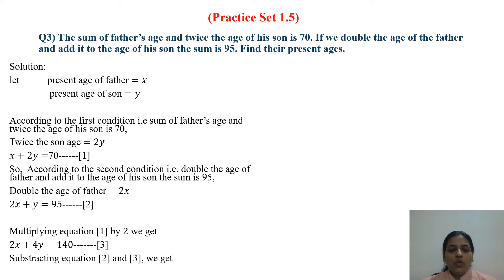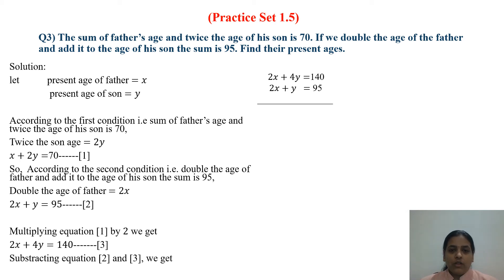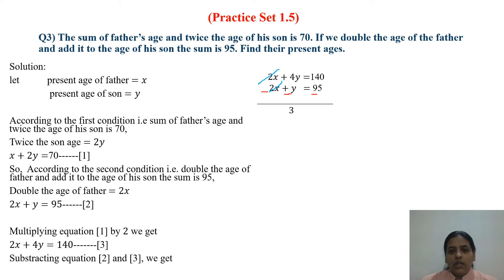Subtracting equation 2 from equation 3: write equation 3 as 2X plus 4Y equals 140, then subtract equation 2, which is 2X plus Y equals 95. Changing signs: 2X minus 2X cancels, and 4Y minus Y gives 3Y equals 45. Therefore Y equals 45 divided by 3, which is 15.